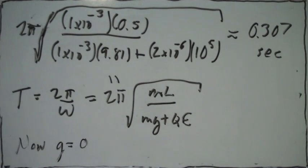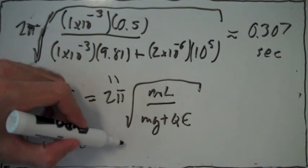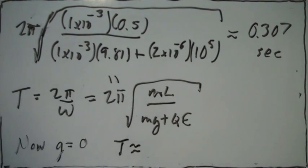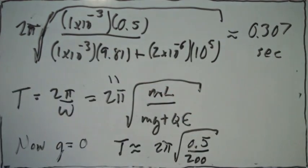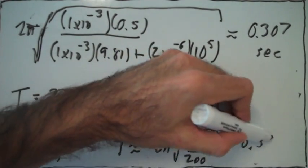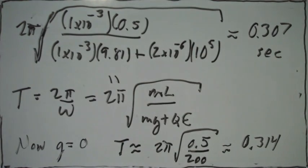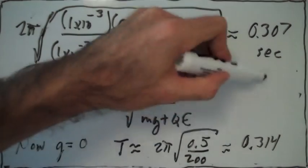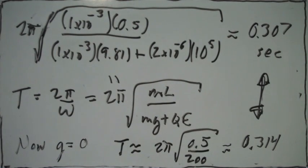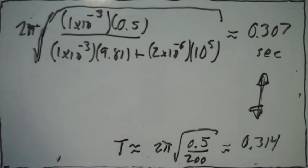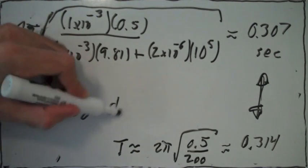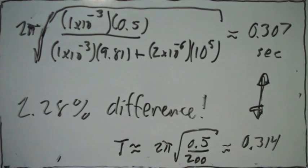Now, what if we neglect gravity? If g equals 0, the period of oscillation becomes 0.314 seconds. These numbers are slightly different from when we take gravity into account versus when we set g equal to 0. The difference between these two numbers is 2.28%. So gravity does play a significant role and we have to take it into account.